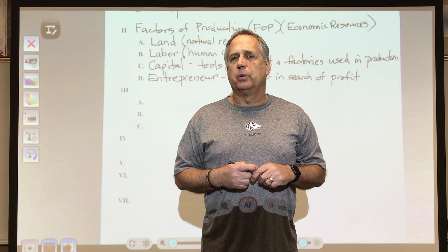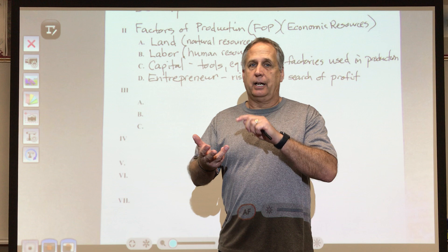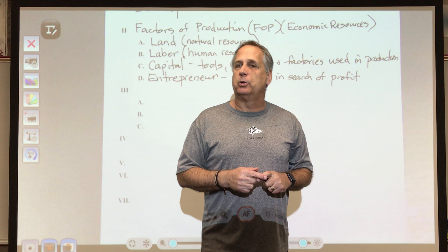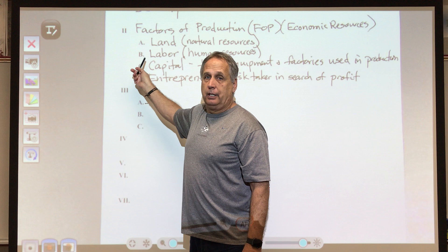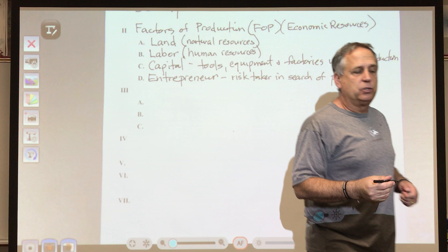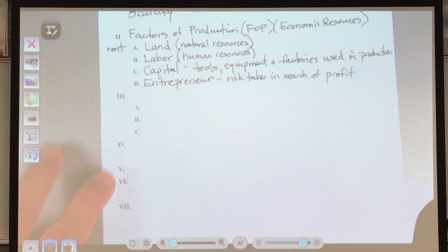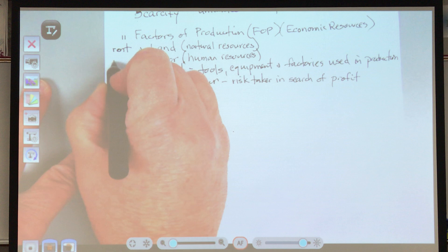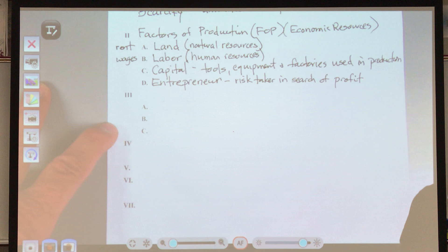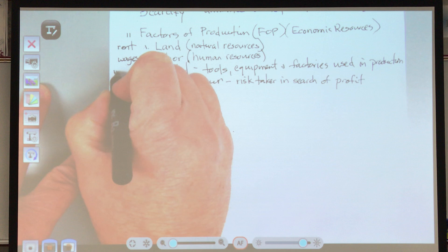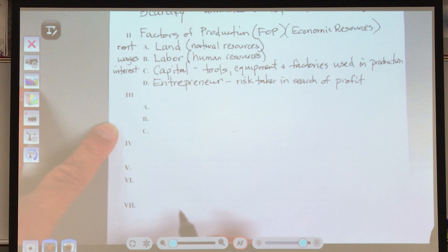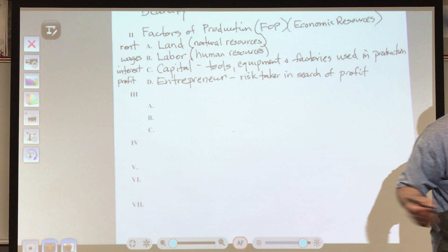Sometimes an entrepreneur has an idea but doesn't own the land, capital, or labor — they have to pay for the use of these factors. There's a word for each payment: if an entrepreneur uses someone else's natural resources, they pay rent. If they use someone else's labor, they pay wages. If they use someone else's tools, equipment, and factory — their capital — the payment is called interest. And the payment for the entrepreneur is profit.